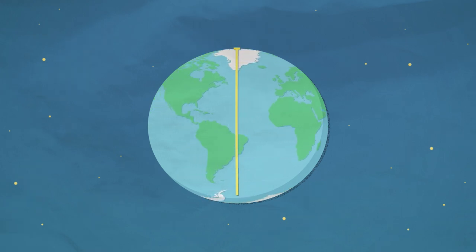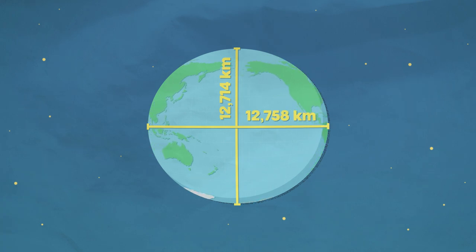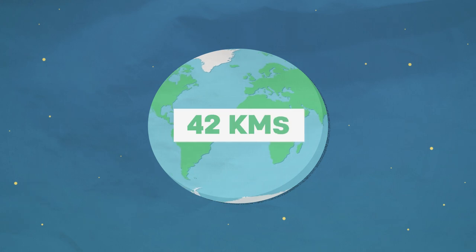And it turns out there's a big difference between round and round-ish. If you measured the Earth's diameter from the North to the South Pole, you'd actually get a different number compared to measuring the diameter around the equator. A difference of just over 42 kilometres. The equator is bulging outwards.